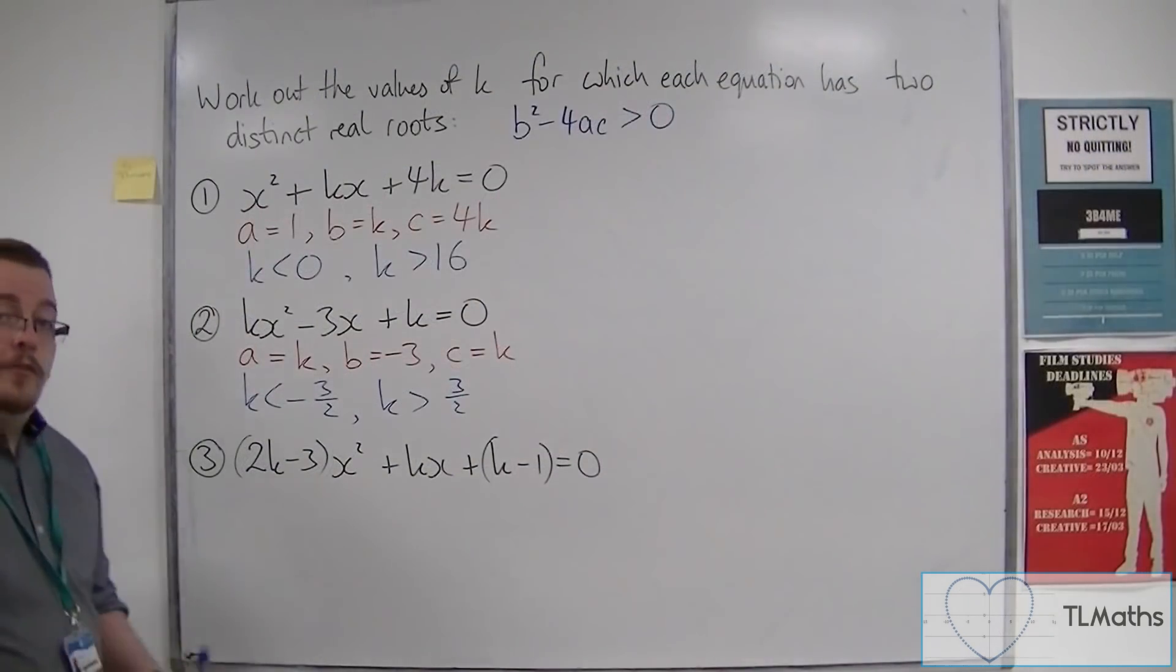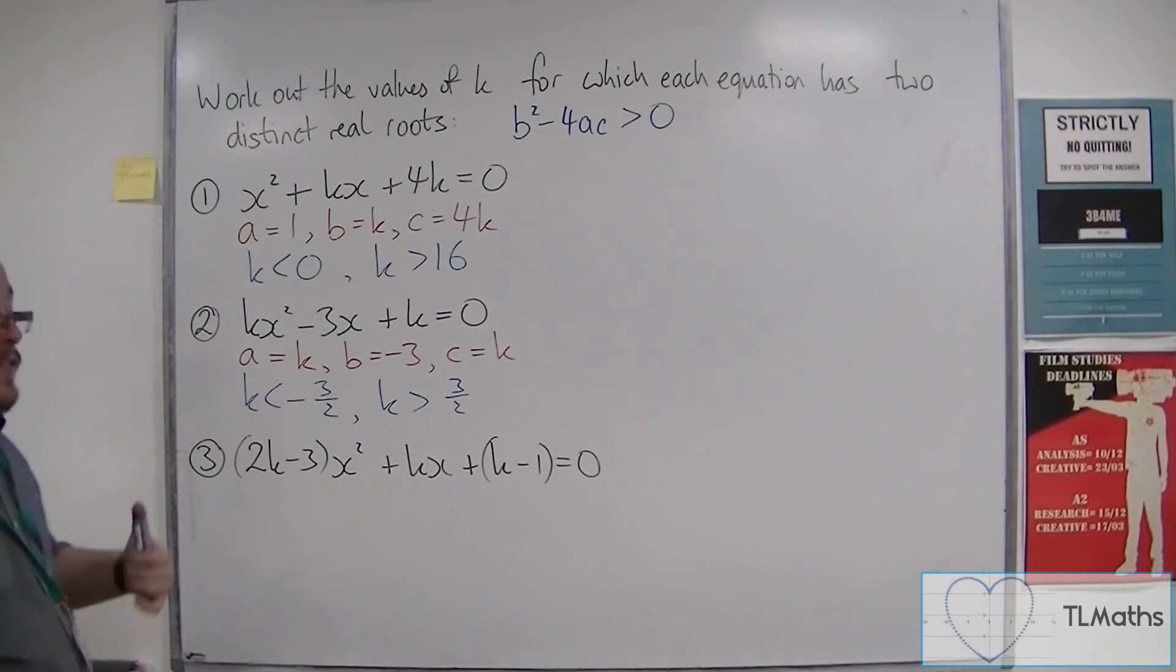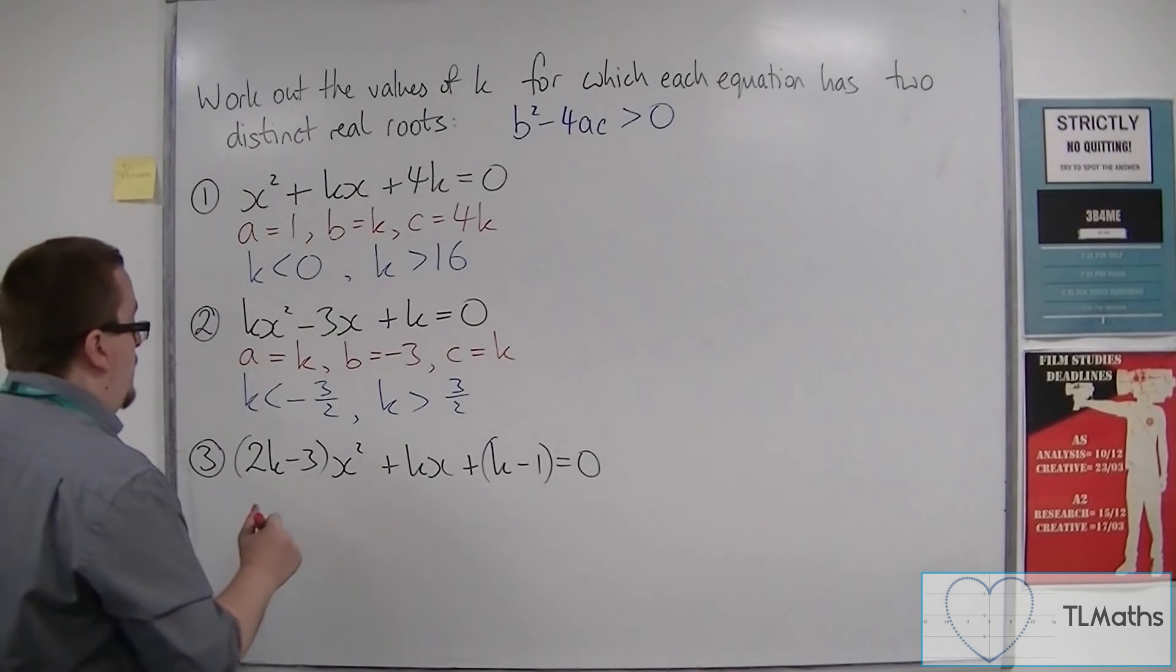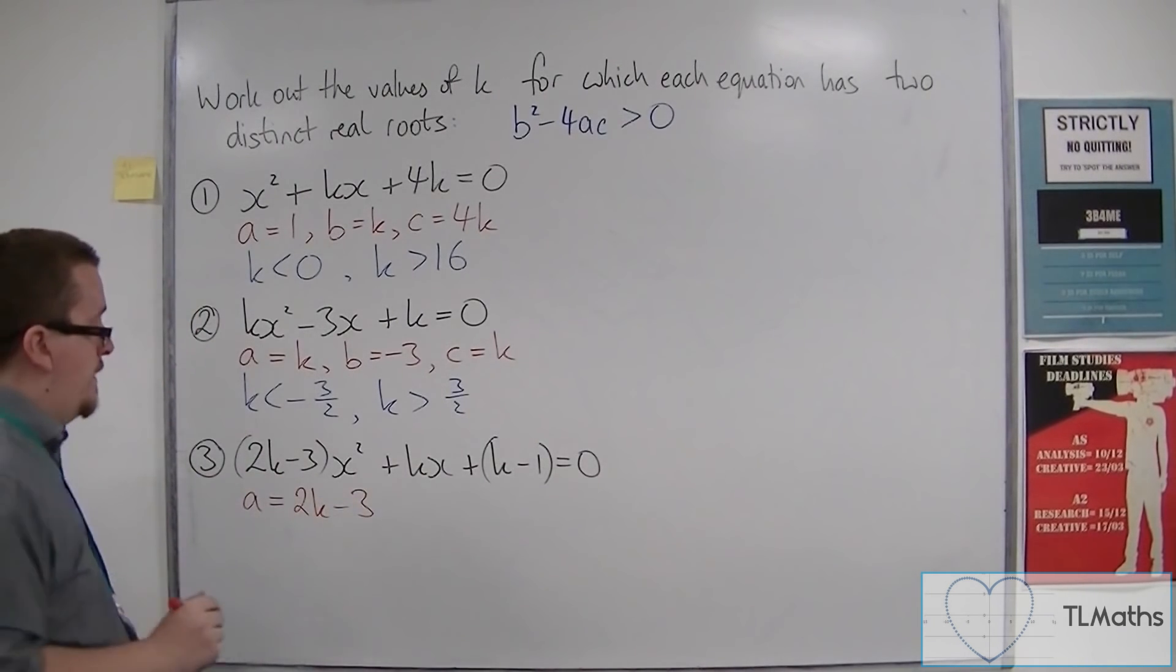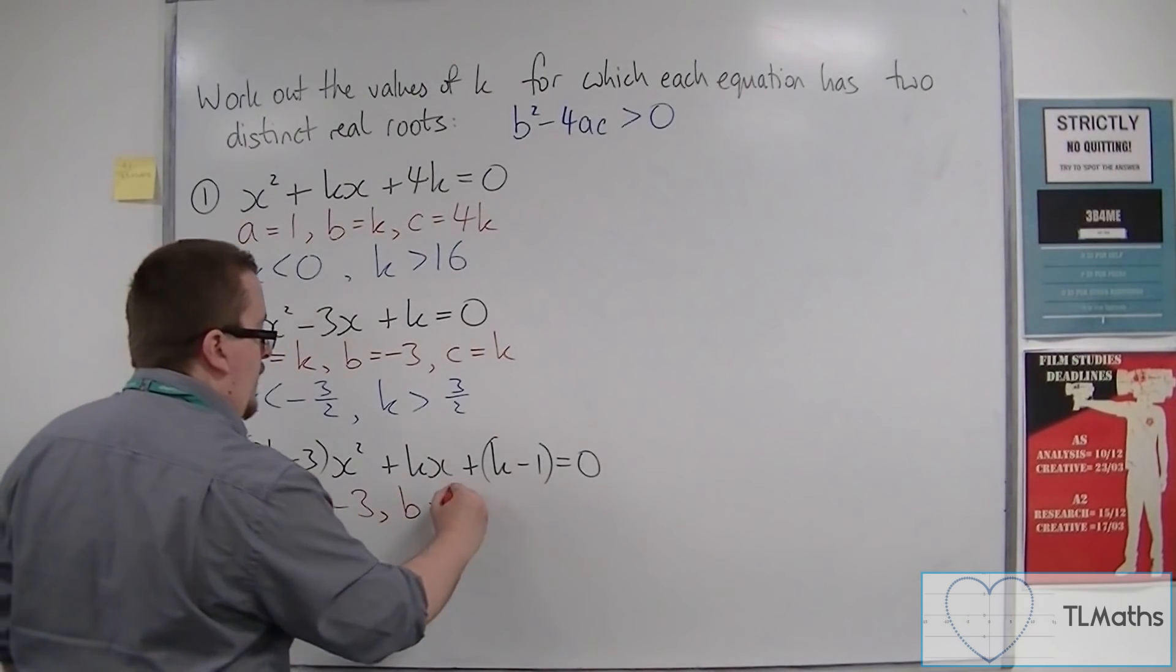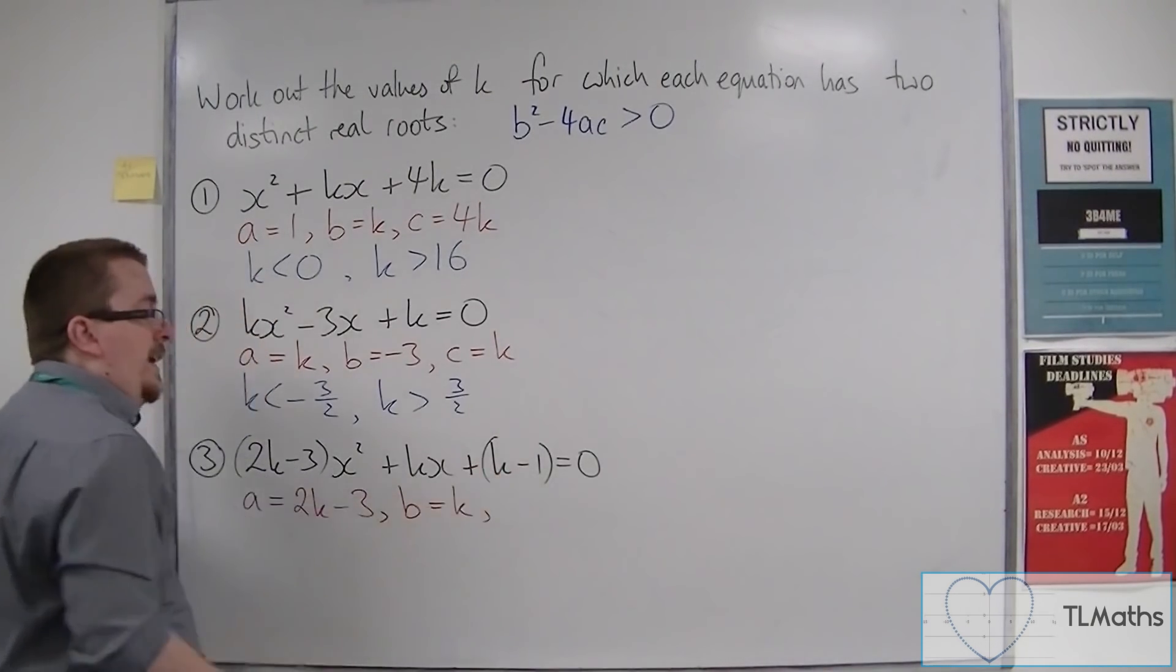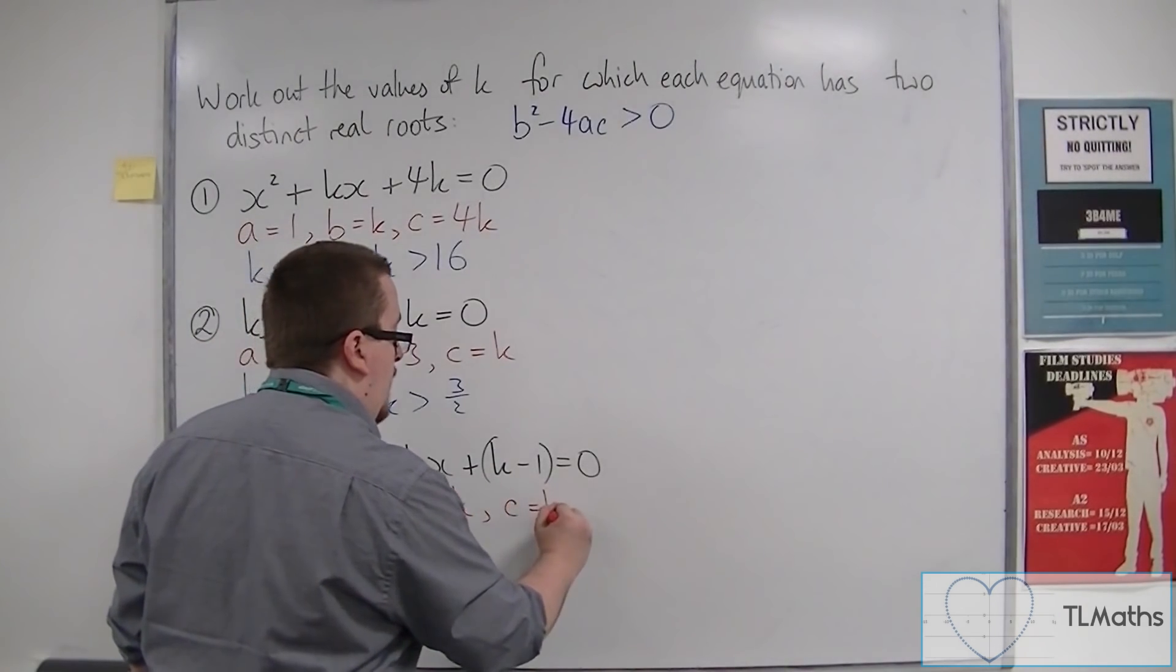So let's look at this final one. OK, it looks quite horrific. But we're going to go through it in exactly the same way. First of all, identify a, b, and c. So a is the coefficient of x squared, so the 2k minus 3. Basically, b is the coefficient of x, so k. And c is whatever you've got left over. It's that whole thing there. So c is k minus 1.